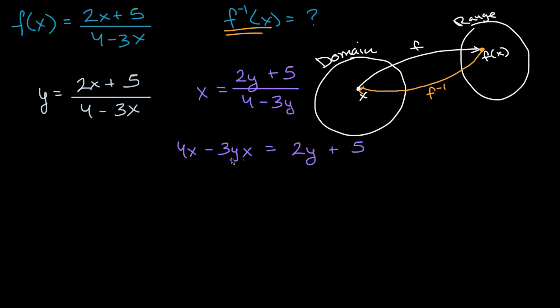And this could be a little bit intimidating because we're seeing x's and y's. What are we trying to do? Remember, we're trying to solve for y. So let's gather all the y terms on one side and all the non-y terms on the other side. So let's get rid of this two y here. Let's subtract two y from both sides. And let's get rid of this four x from the left hand side. So let's subtract four x from both sides.